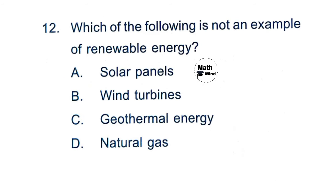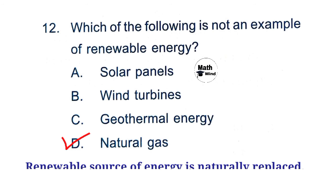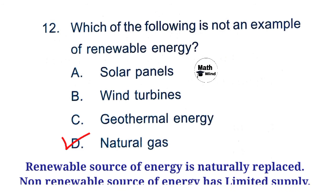Question 12: Which of the following is not an example of renewable energy? Option D is correct: natural gas. Renewable sources of energy can be used repeatedly and do not run out because they are naturally replaced. Energy generated from solar panels, wind turbines, and geothermal energy are all renewable, whereas natural gas has a limited supply.